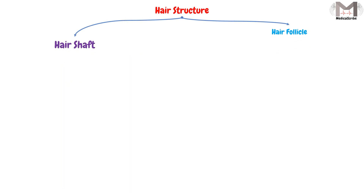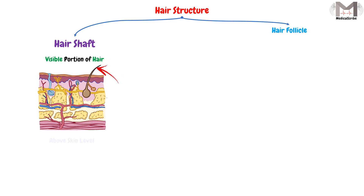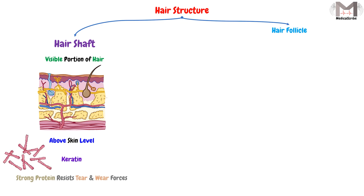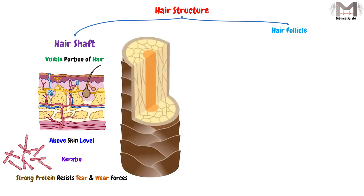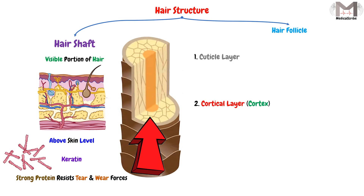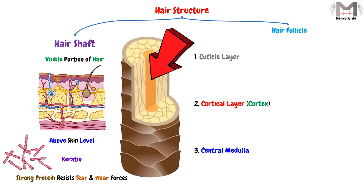Firstly, we have the hair shaft. The hair shaft is the visible portion of the hair, which is above the skin level — so what we see with our eyes is the hair shaft only. This shaft contains a protein called keratin, which is a very strong protein that resists tear and wear forces.